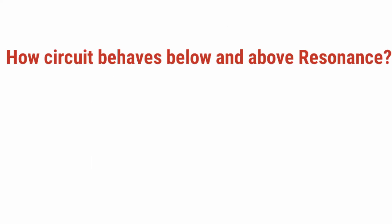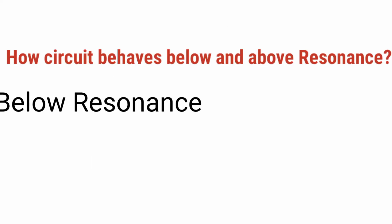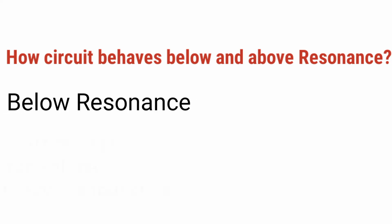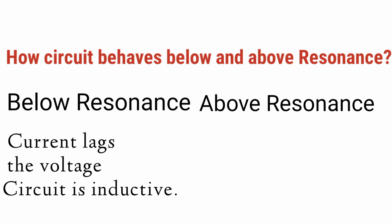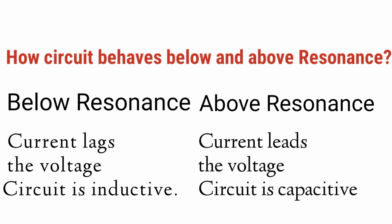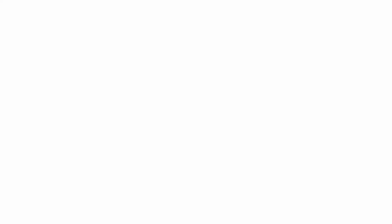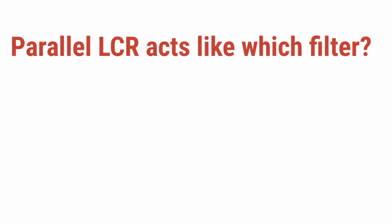How does the circuit behave below and above resonance? Below resonance, the current lags the voltage and the circuit is inductive. Above resonance, the current leads the voltage and the circuit is capacitive.